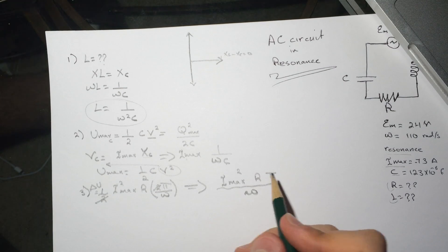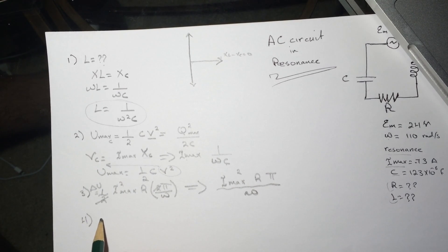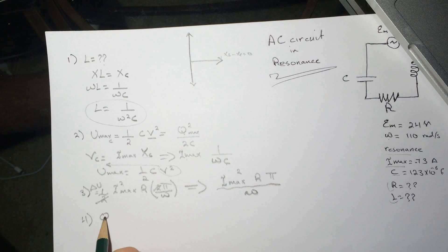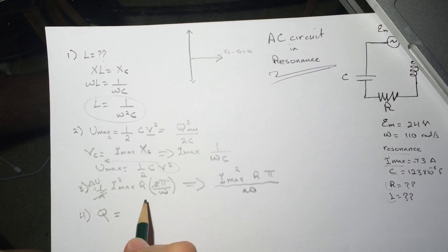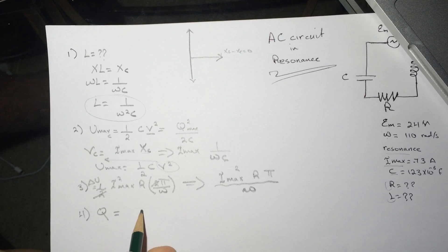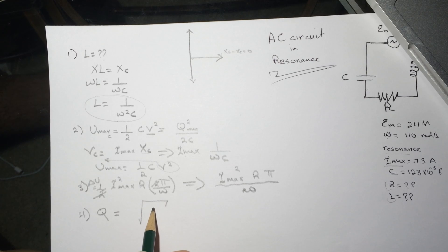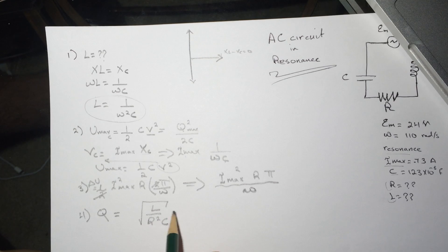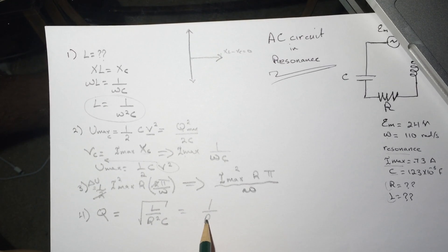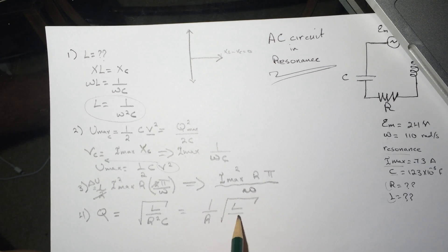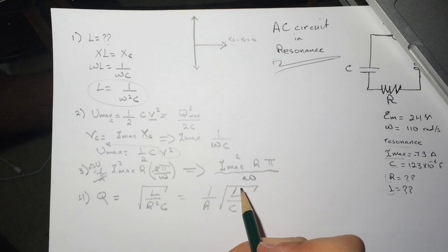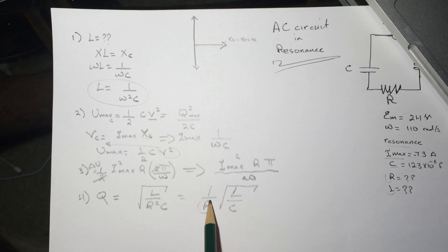The fourth question is asking about the quality factor of this circuit. The quality factor will be square root of L over C divided by R, which is also 1 over R times square root of L over C. We need to find R.